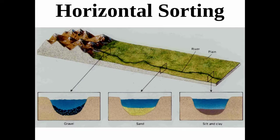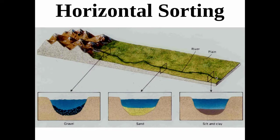Here's a clearer version of the picture showing horizontal sorting. As the river goes from the mountainous region to the flatter region, the velocity slows. Gravel — meaning pebbles — gets dropped off first. As it slows further due to the flatter gradient, some sand gets dropped off, and then further on, silt and clay — the smaller particles.